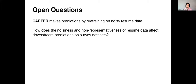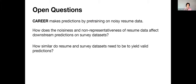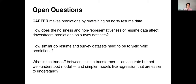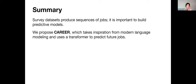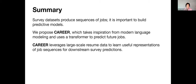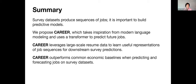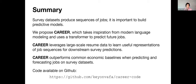Open questions include: how does the noisiness and non-representativeness of the resume data affect downstream predictions, and how similar do the data sets need to be to yield valid predictions? What models are easier to understand, especially once we layer in extra requirements like fairness? To summarize: our survey data sets produce sequences important for predictive models; we propose CAREER, which takes inspiration from modern NLP, leverages large-scale data sets to learn useful representations, and outperforms common economic baselines when predicting and forecasting. Our code is available on GitHub.